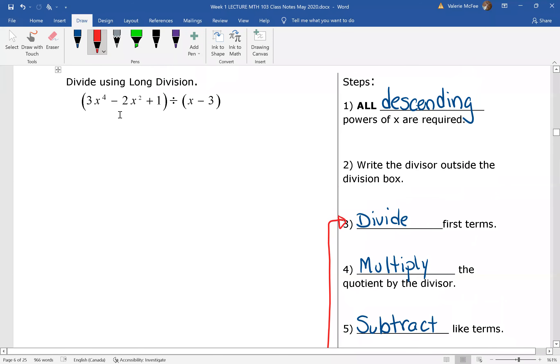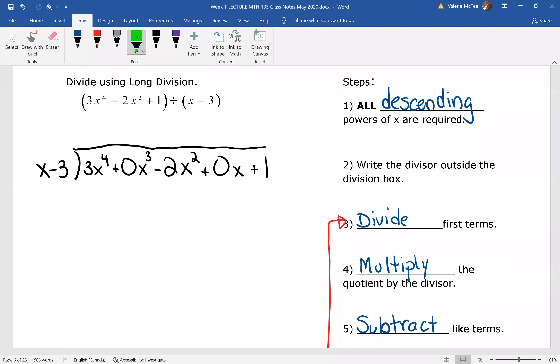So our first step is to write out the division question. Pause your video and do so. Did you notice that you were missing x to the power of 3 and x to the power of 1? Did you put in your terms with 0 as a placeholder? I hope so. All right.